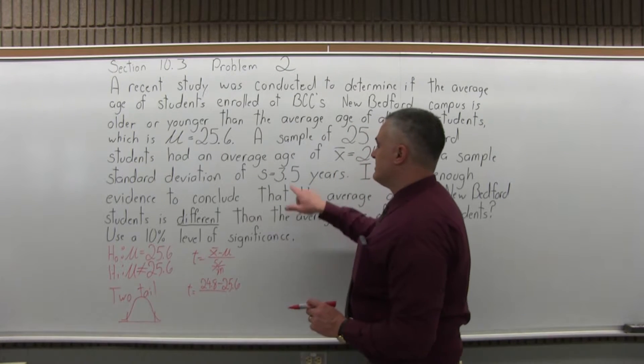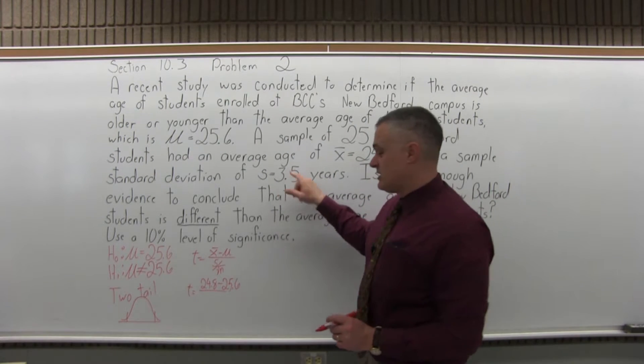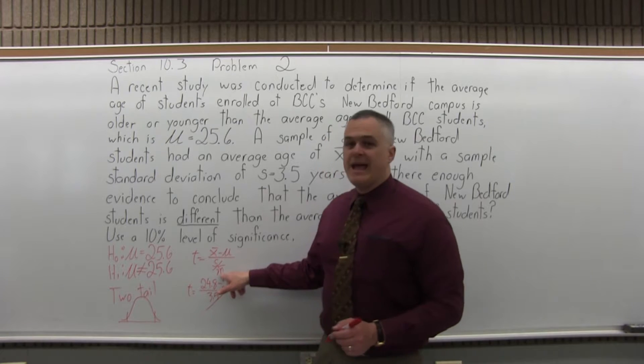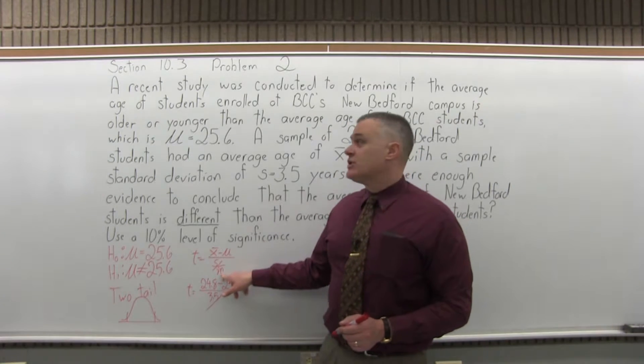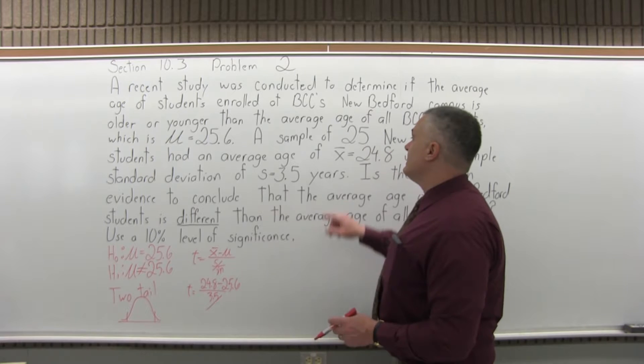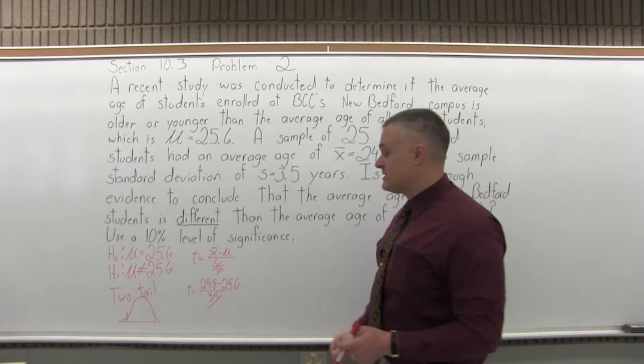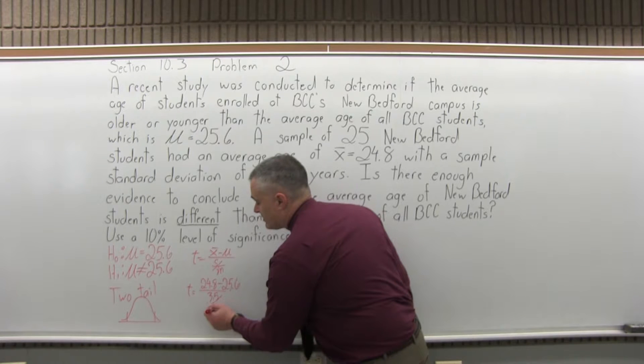Over the square root of n. n is the size of the sample. So if we read through this problem, it says a sample of 25 New Bedford students. So the sample size is 25. Don't forget the square root. That makes a difference. That's sort of a common mistake.